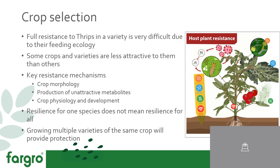There's also crop physiology and development — thrips might attack certain species at certain stages of development. If you can find a variety that doesn't linger at that stage for as long, that could be beneficial. But importantly, resilience for one species of thrips does not mean resilience for all species. What makes a variety unattractive to Western Flower Thrips could make it quite attractive to Onion Thrips. So you need to know which species you're trying to keep away before selecting the correct variety.